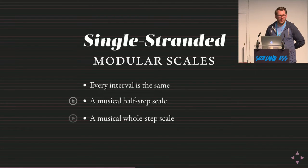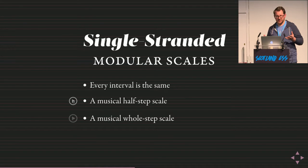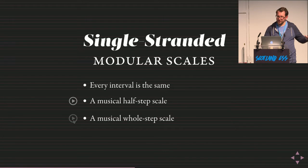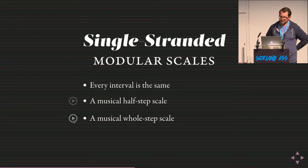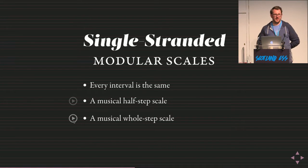In a western octave there are 12 half steps, and eight notes in a typical major scale. The pattern repeats, and every note is 1.0595 times the one before it. A musical whole-step scale is also strictly single-stranded modular.